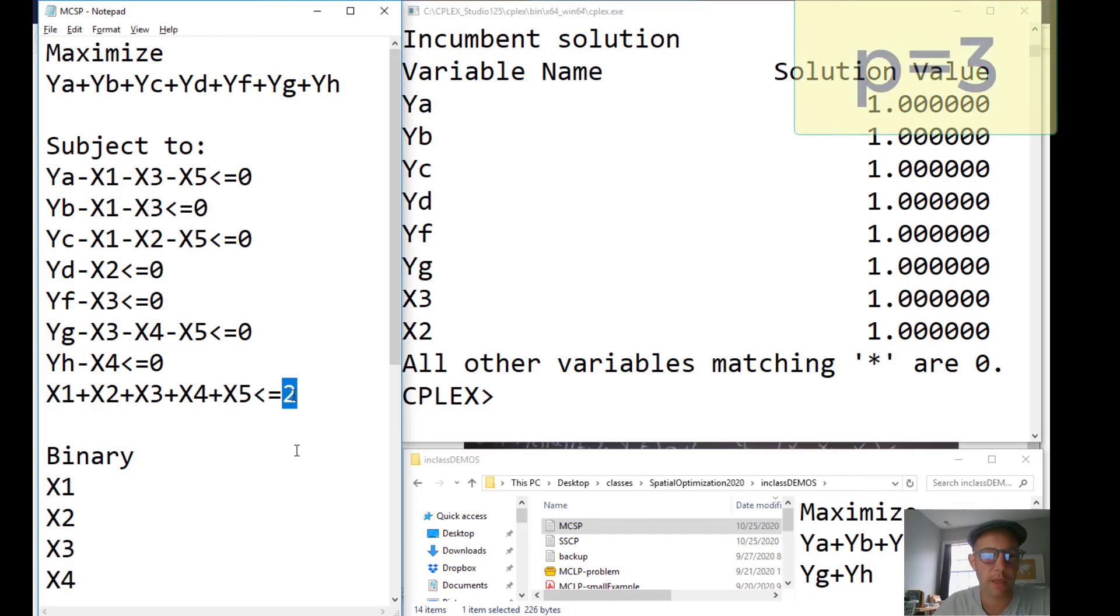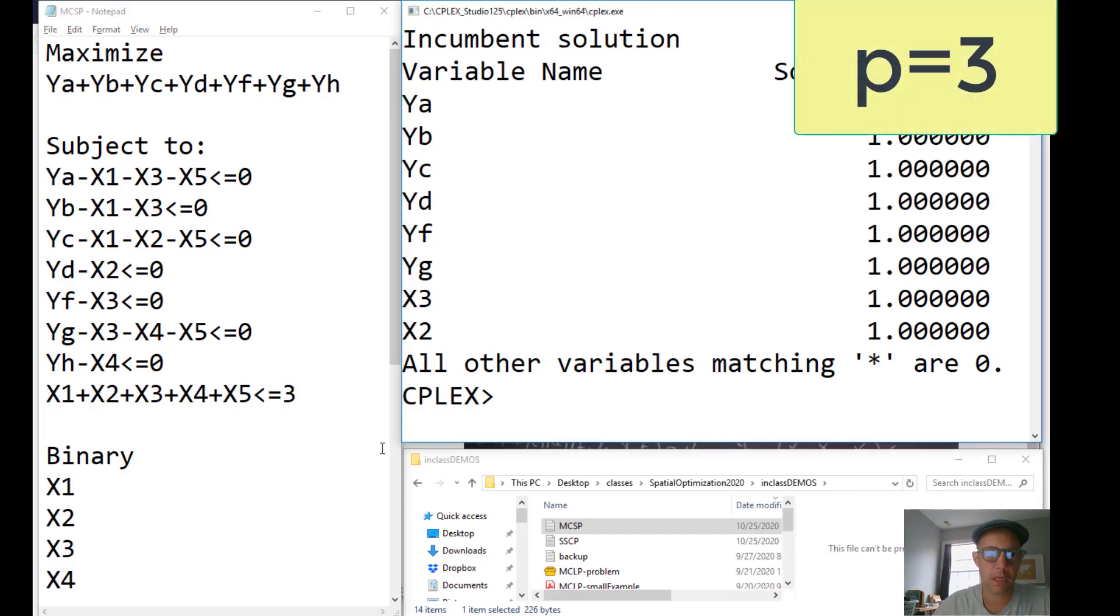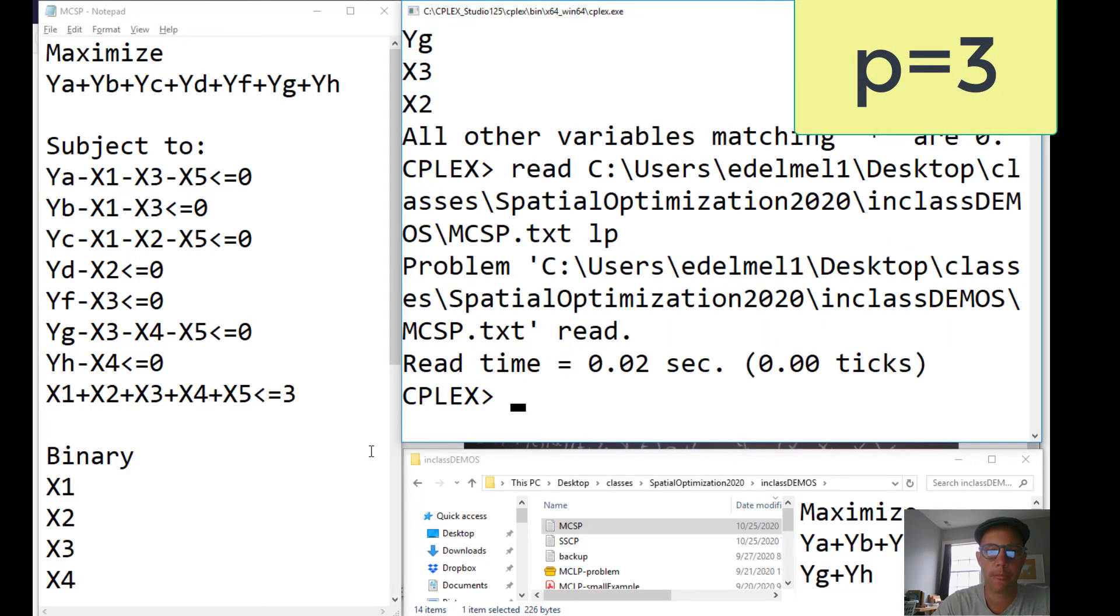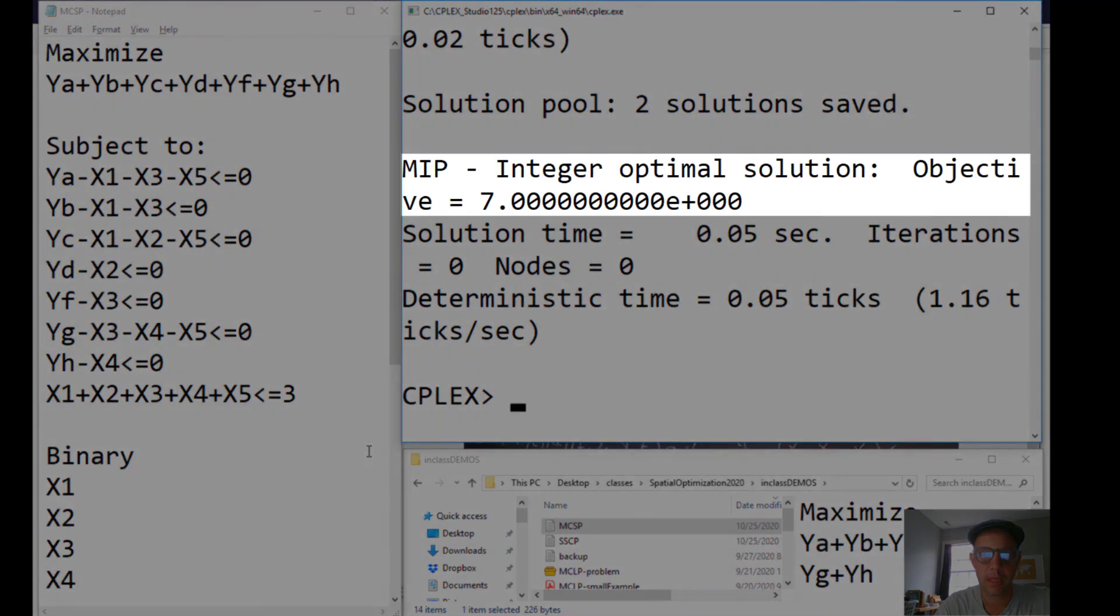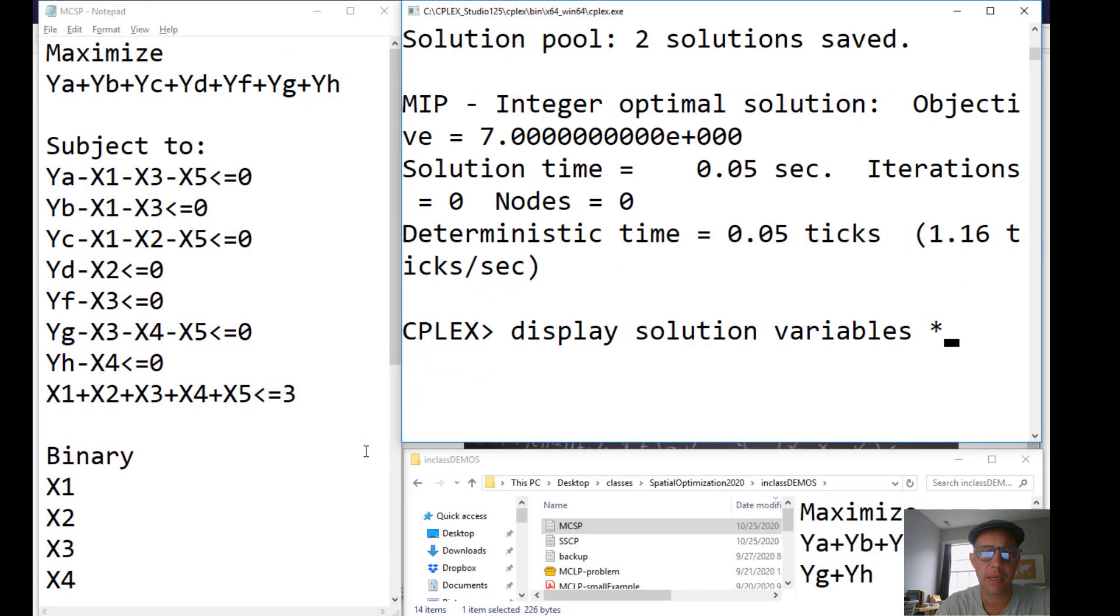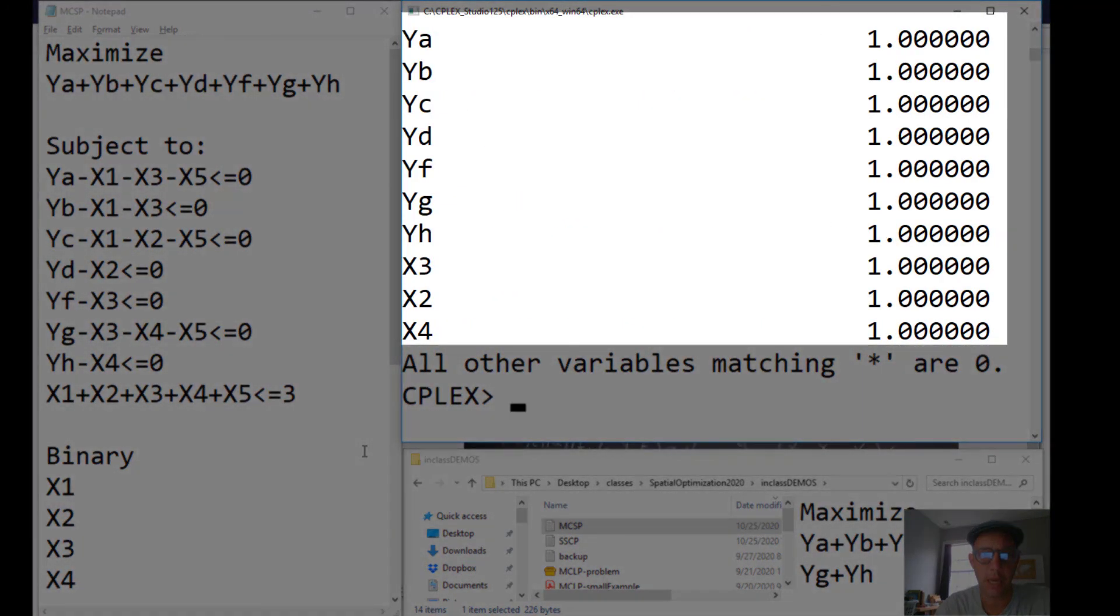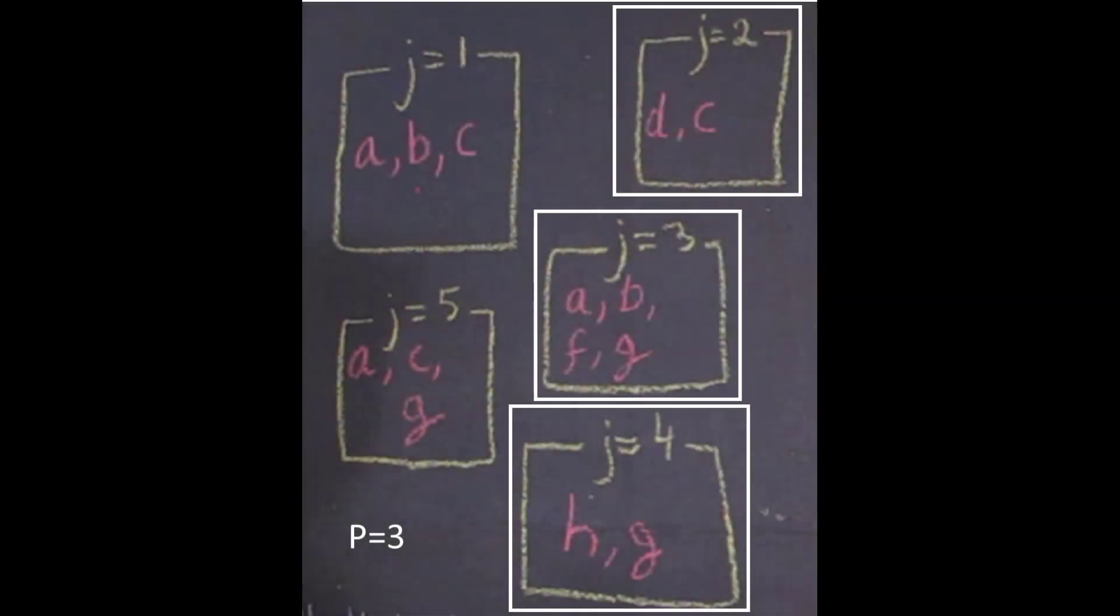Let's go up to three. Run this again. Optimize. Now the objective function is seven, and seven is the total number of species that we have, and we can display the solution variables. We'll see that two, three, and four are selected. We can see two, three, and four being selected, and then all the species being represented in this setup.